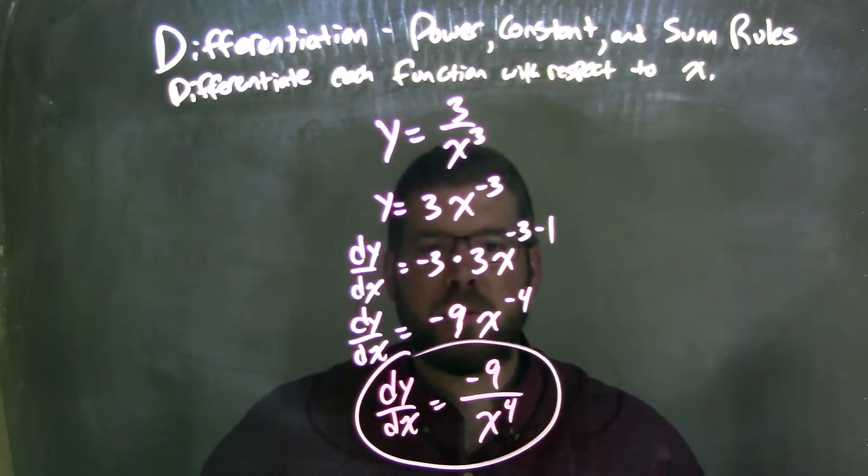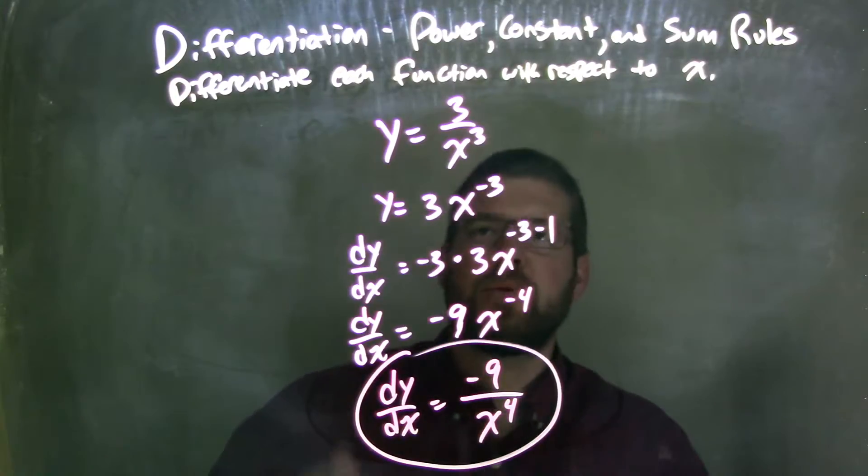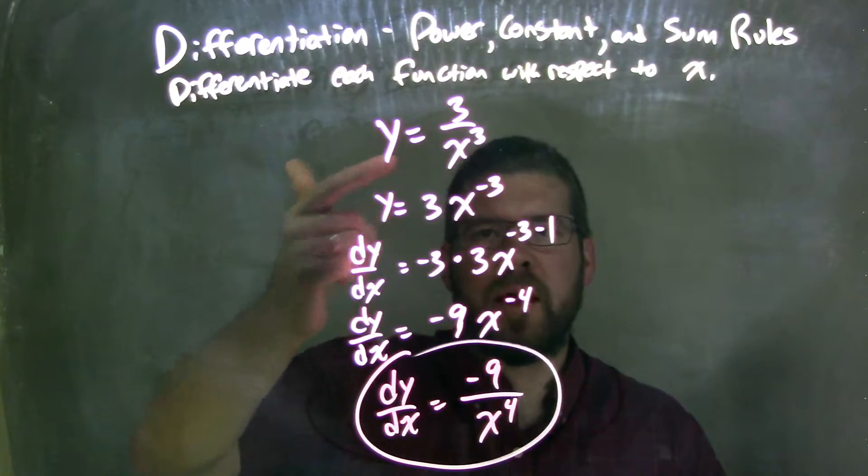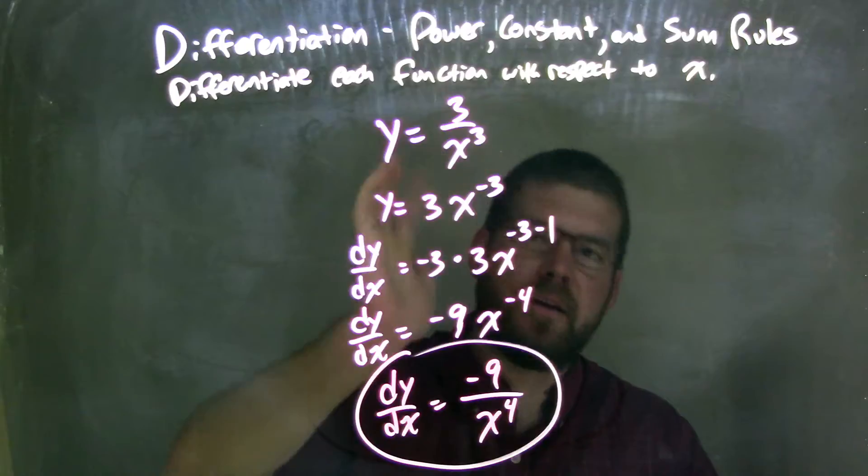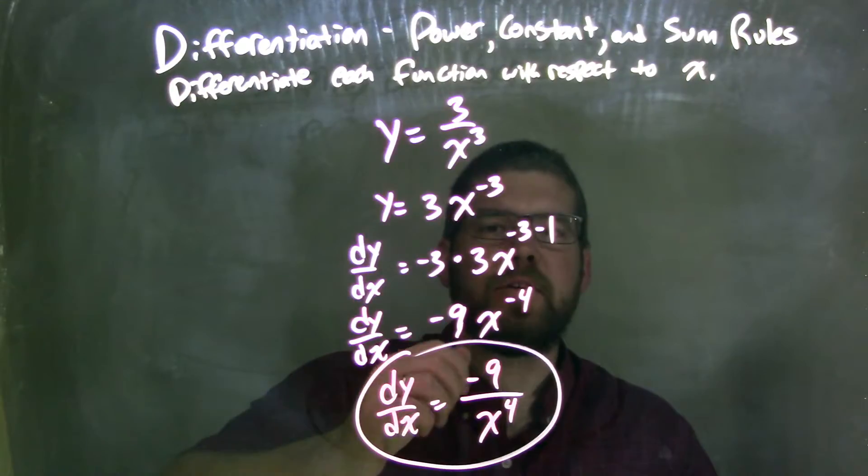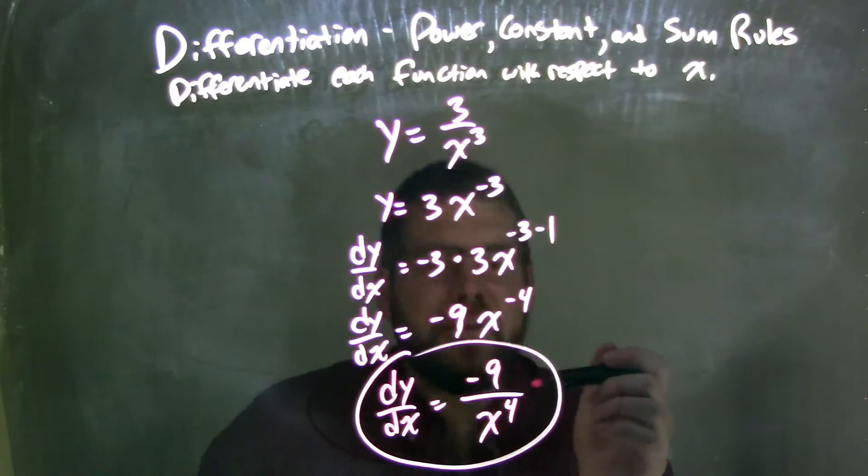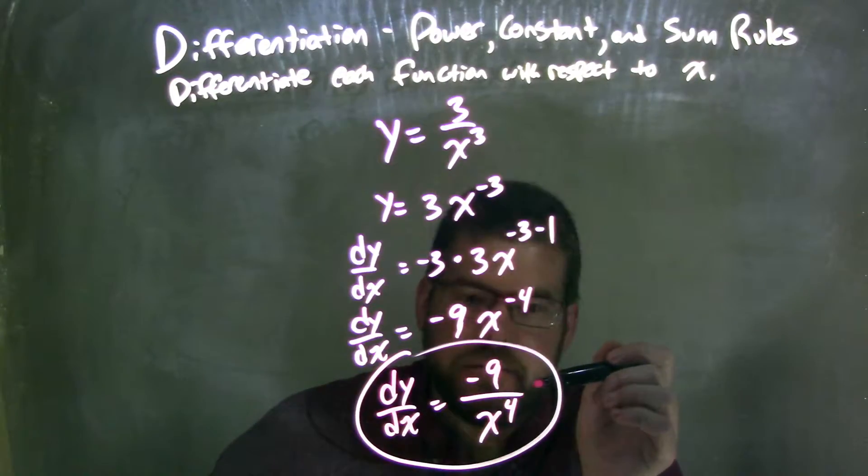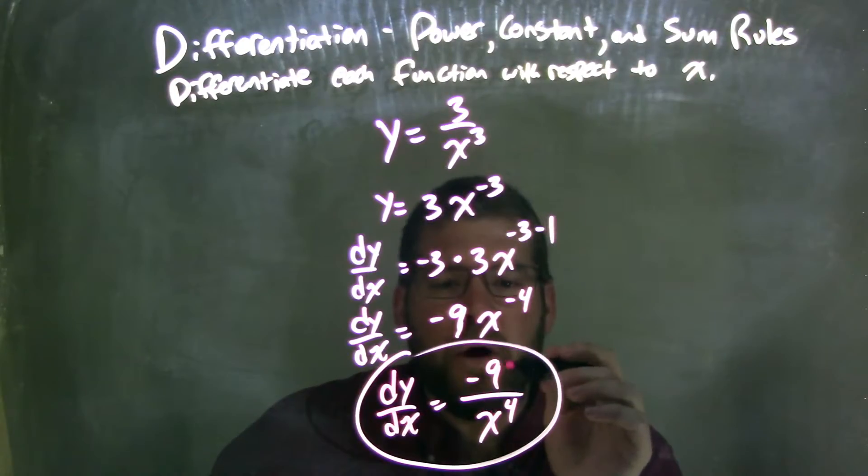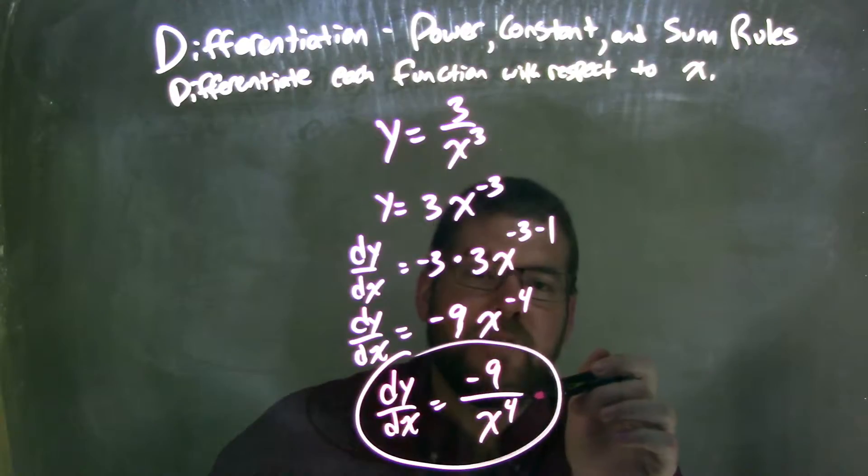And there we go, okay? So long story short, basically, when I'm doing the power rule, I like to have my x's in the numerators. And I don't mind if it's negative x, but I find it easier. But then at the end, I have to rewrite it to make it where the exponent's positive, and so it's negative 9 over x to the positive 4th power.